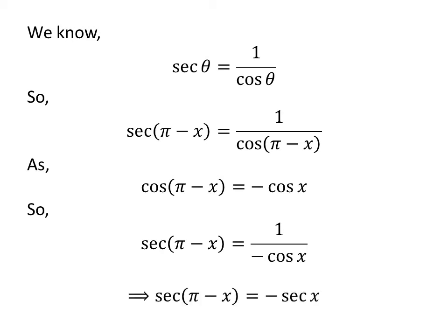We know 1 upon cosine of x is equal to secant of x. So secant of pi minus x is equal to minus secant of x.